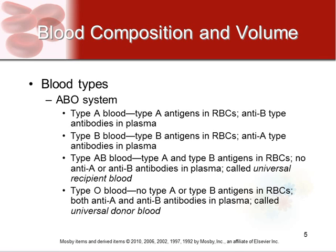A common question is: if type O triggers an immune response when it sees type B, why doesn't giving type O blood to a type B person cause a reaction? The answer is that when we give blood, we've actually removed the white blood cells that would react. So the donated type O blood just doesn't have a receptor or antigen on it to trigger a reaction. Type AB is the universal recipient because it has antigens for both A and B. Type O is the universal donor because it has no antigens — but type O can only receive type O blood.